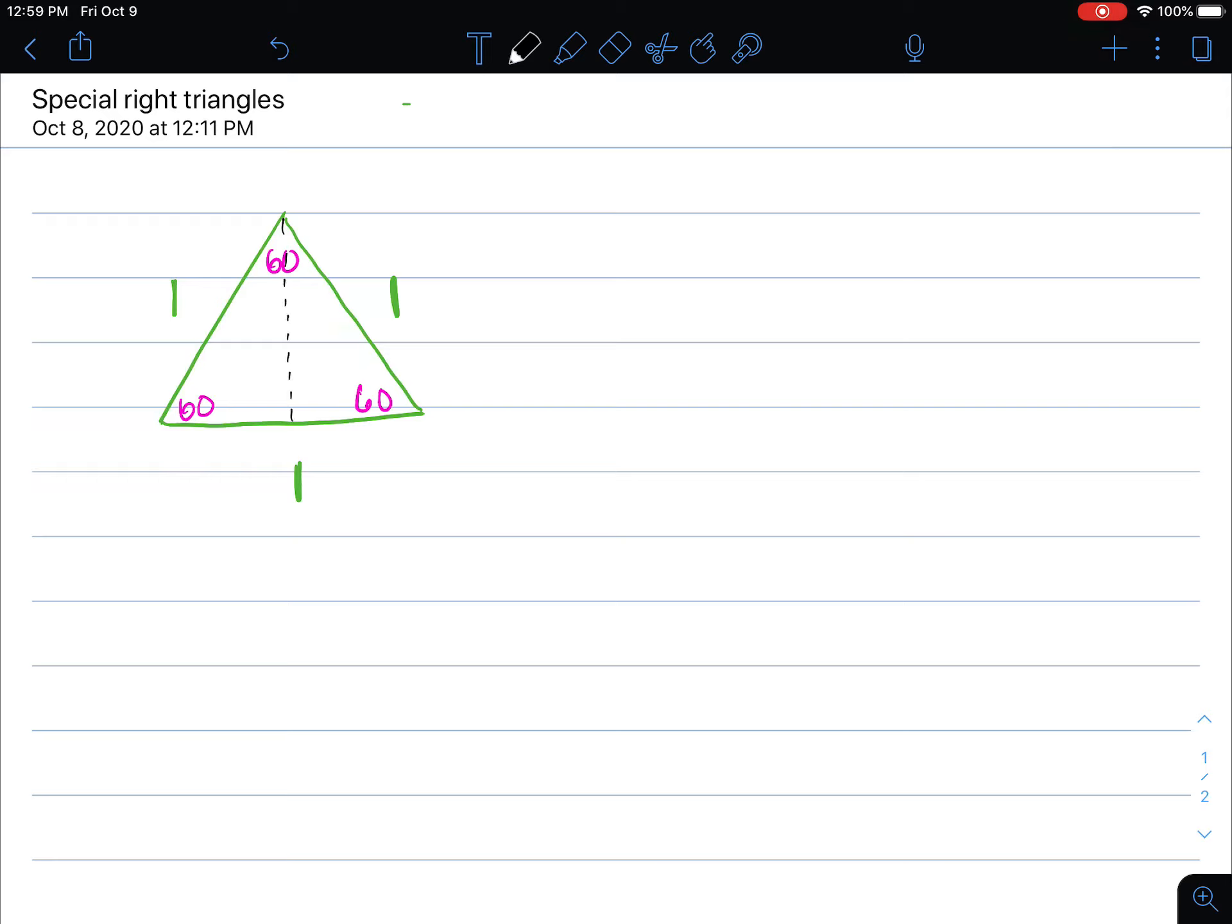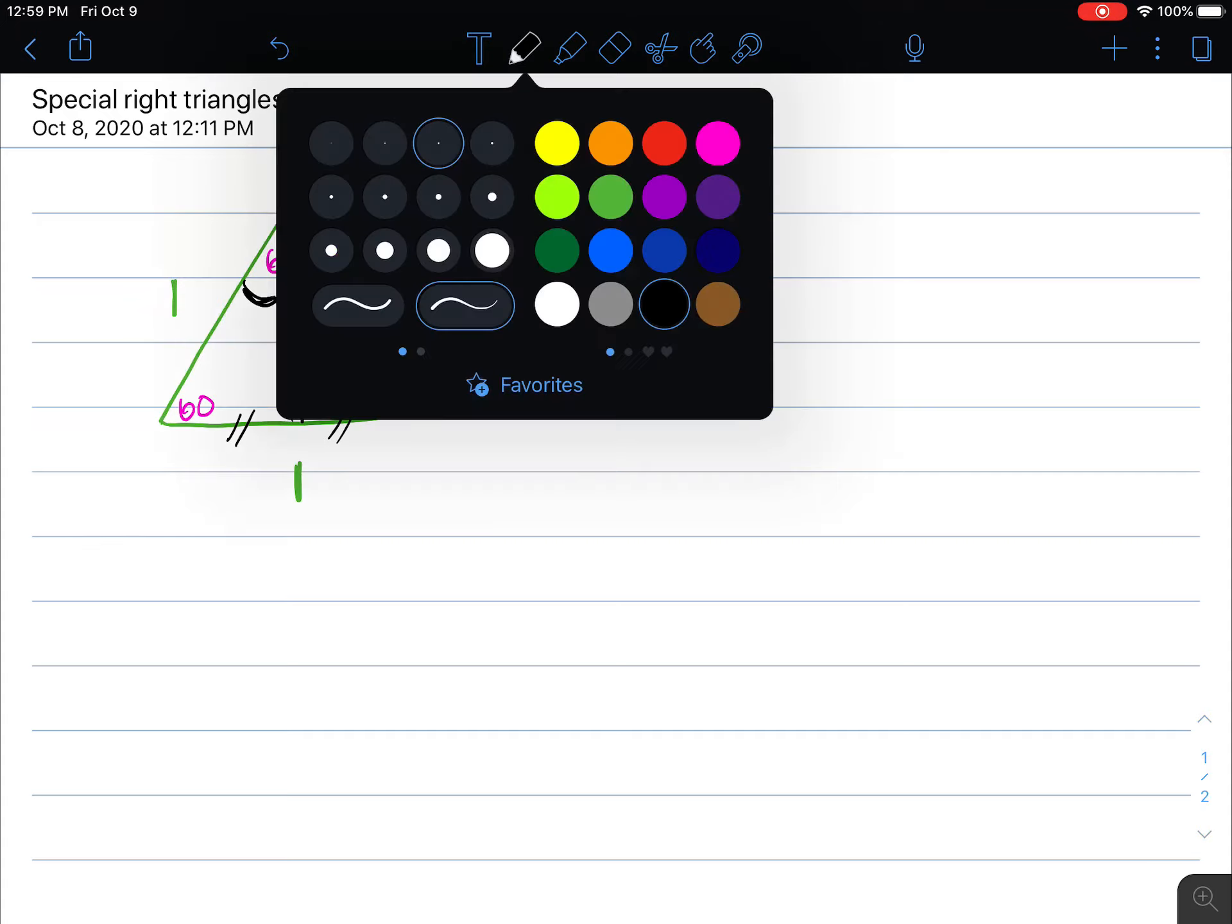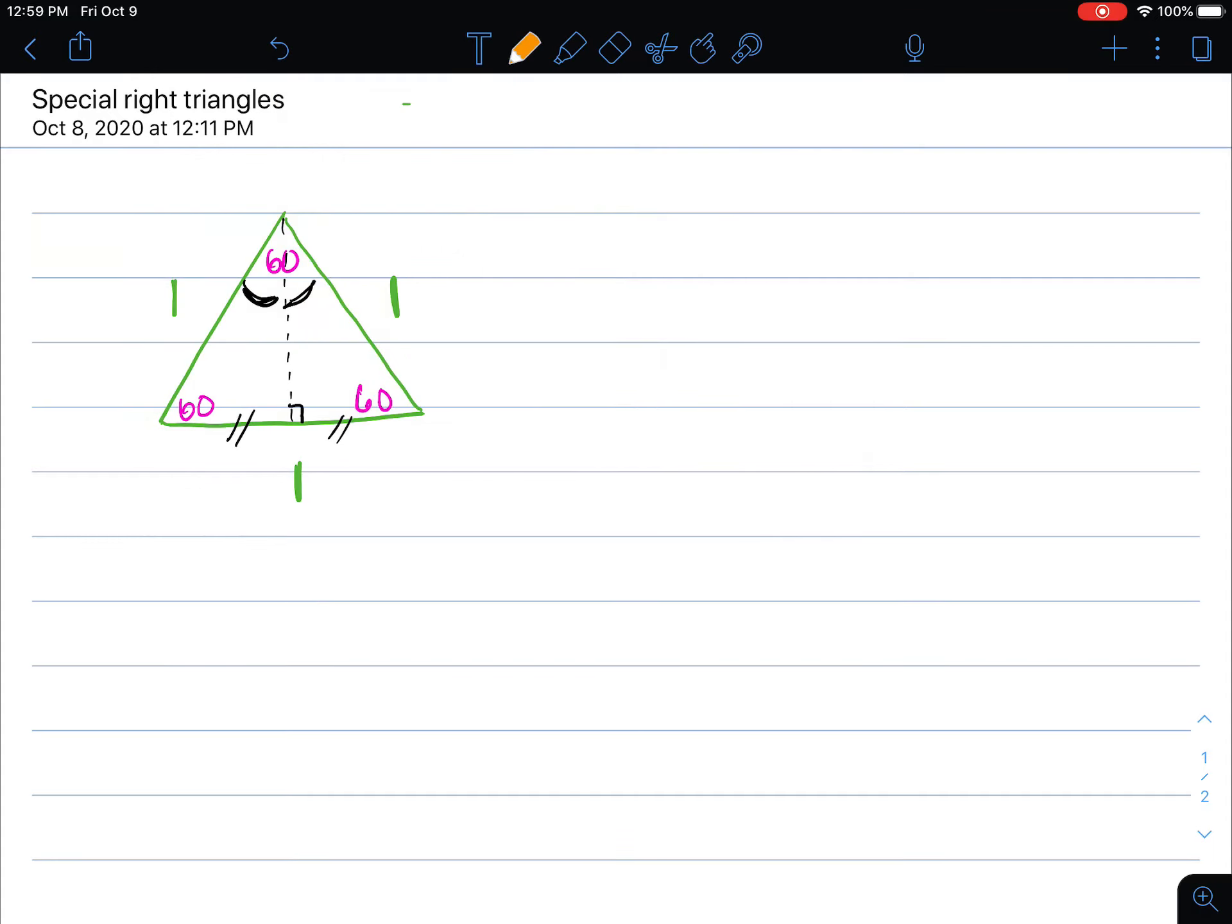...is go ahead and drop this vertical line here which is going to actually be the height of our triangle. So you're drawing in the height of the triangle. In this case it actually is going to bisect both the angle and the segment that it is touching.